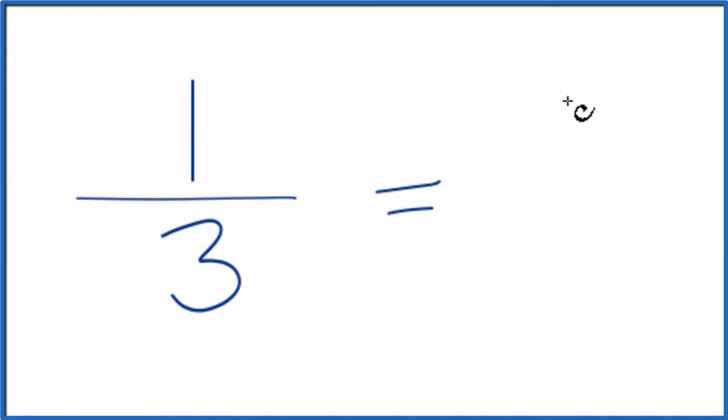So I can divide one by one, and that would give me one. Divide three by one, that gives me three. So my greatest common factor is one, and we end up with what we started with, one-third.